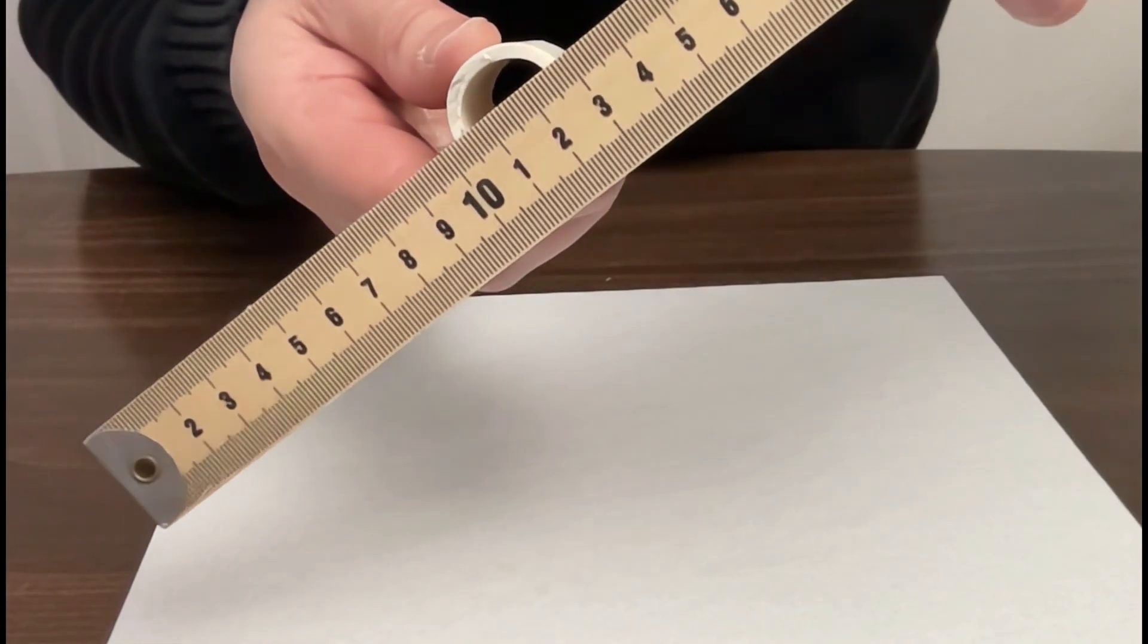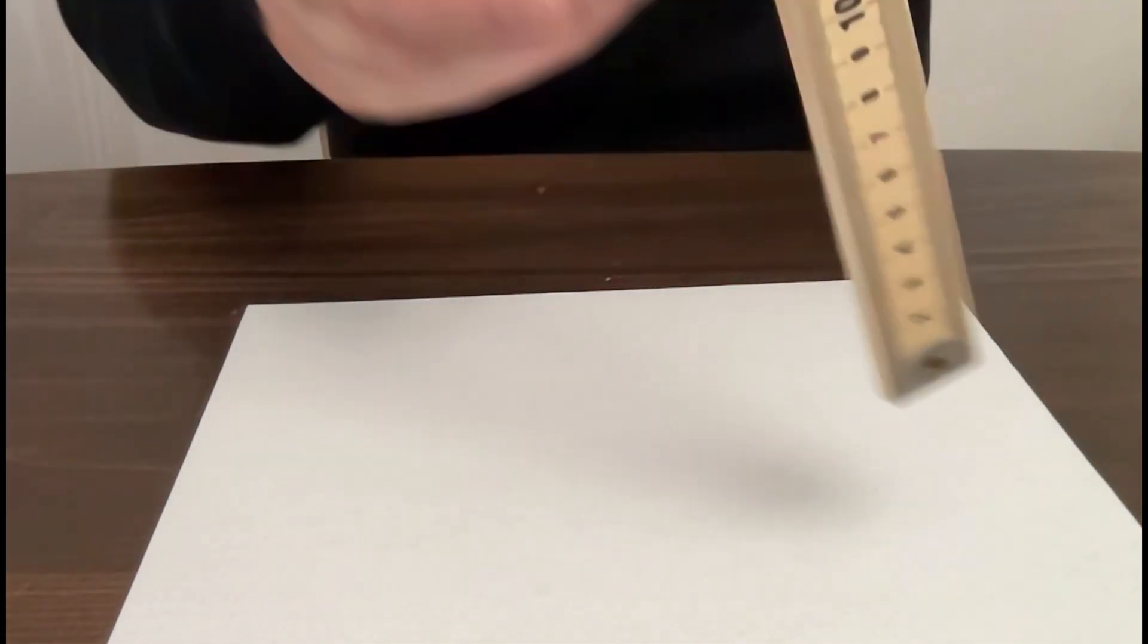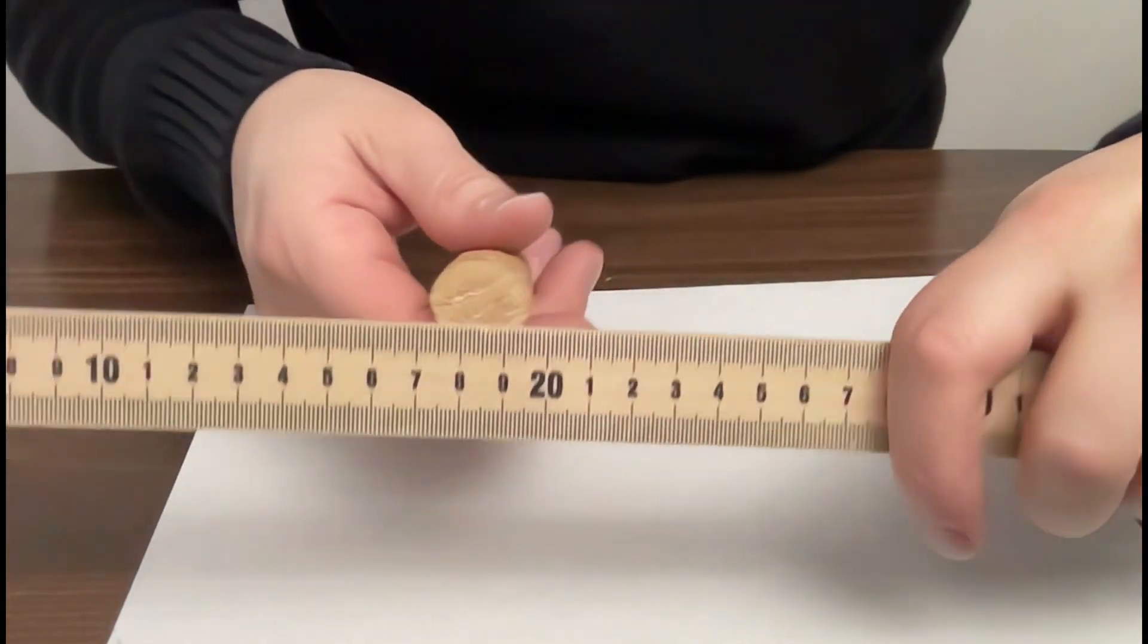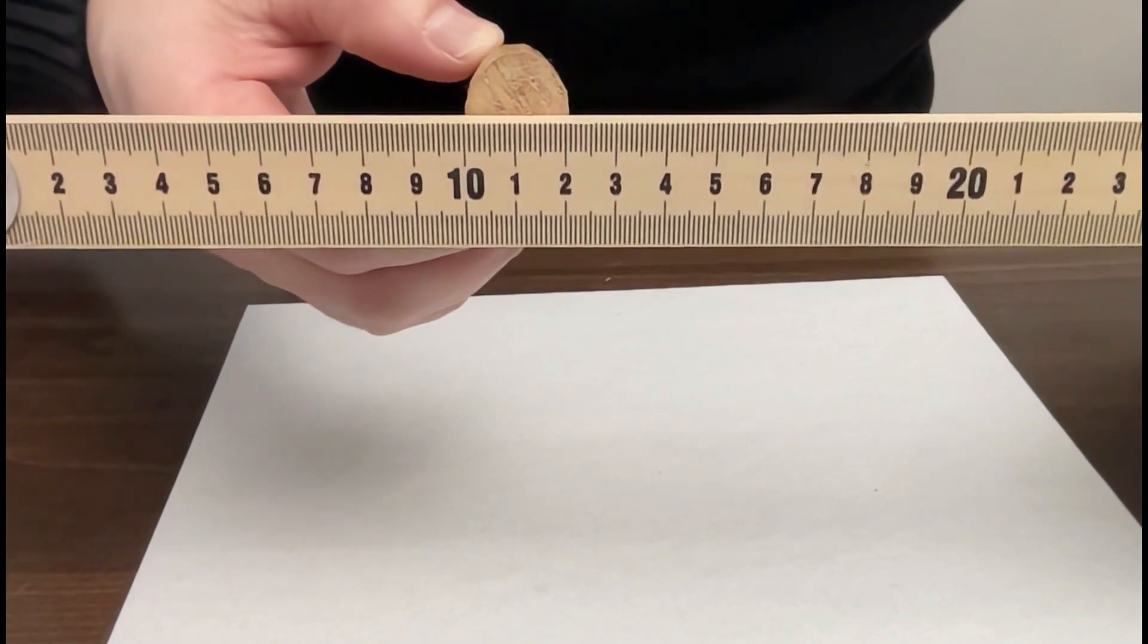So this measurement might be something like 2.61. Measure it multiple different ways like that. And then just do the same for the wood. Measure its diameter multiple times.